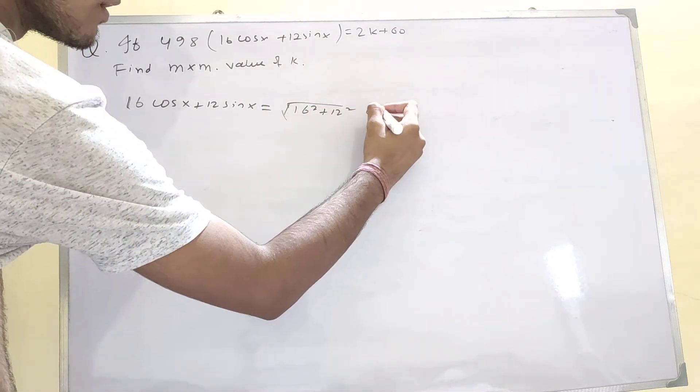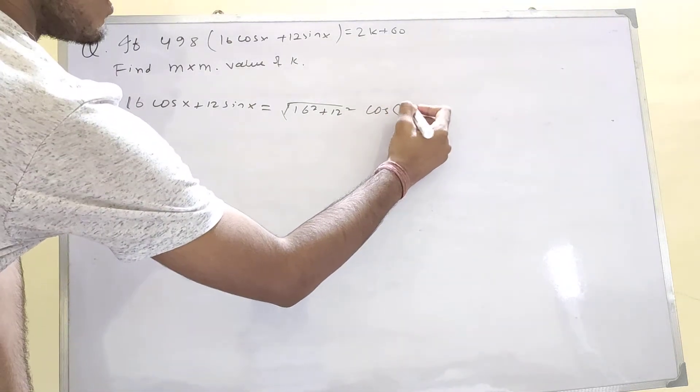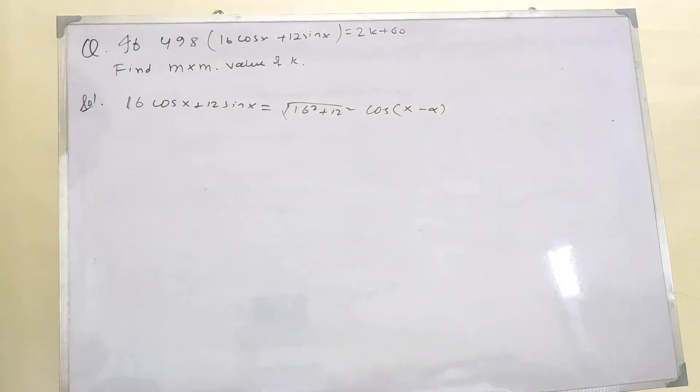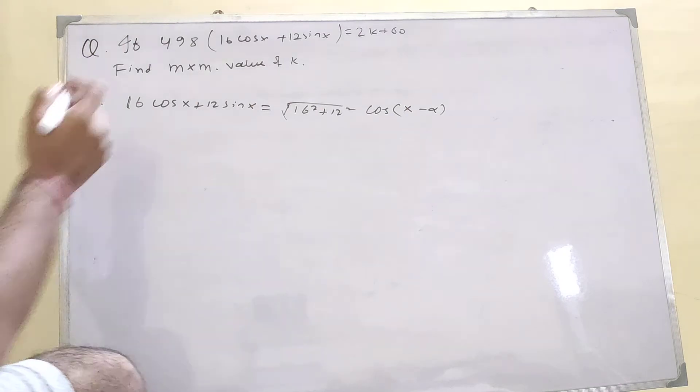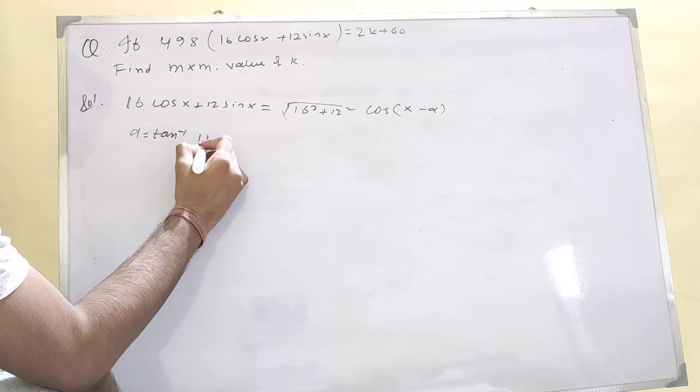...12 squared times cos(x minus alpha), where alpha equals tan inverse of 12 upon 16, which equals tan inverse 3 upon 4.